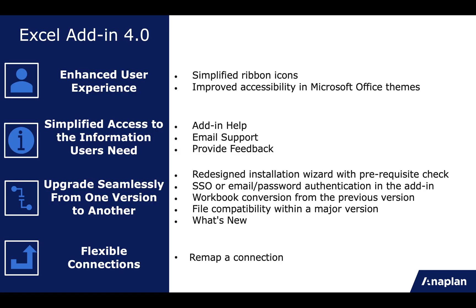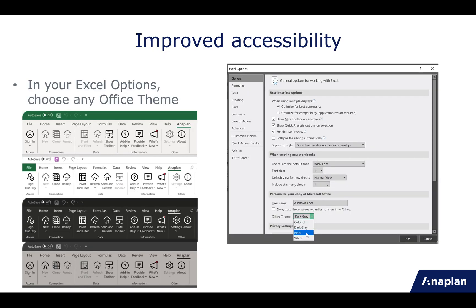We have great news around accessibility. You'll be able to use the different Microsoft Office themes. If you go to your Excel options, you can choose colourful, dark grey, black, or white office themes. In the past, the icons wouldn't work if you used the black office theme, for example. But now, as you can see on the left-hand side, our new icons work in all those themes, which means that our add-in is more accessible.